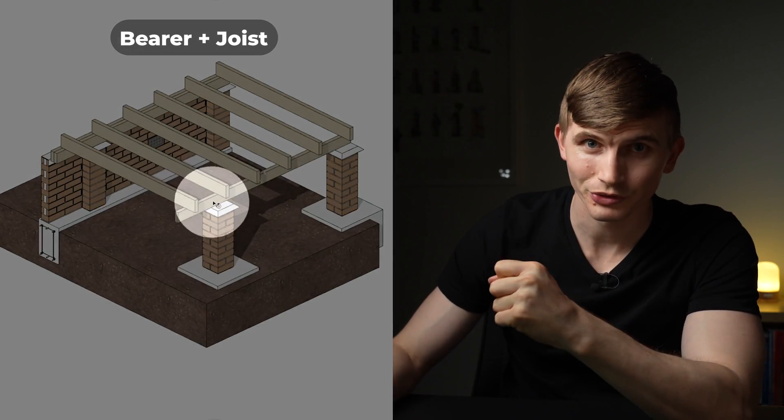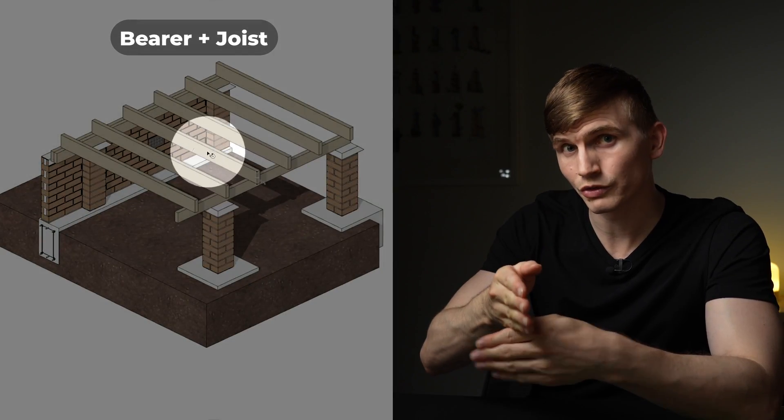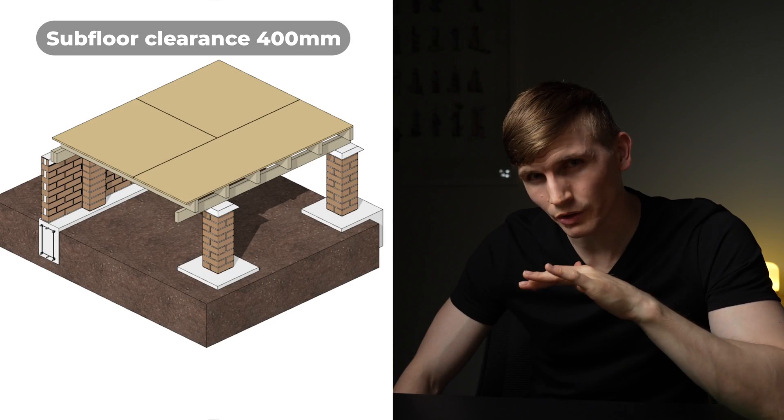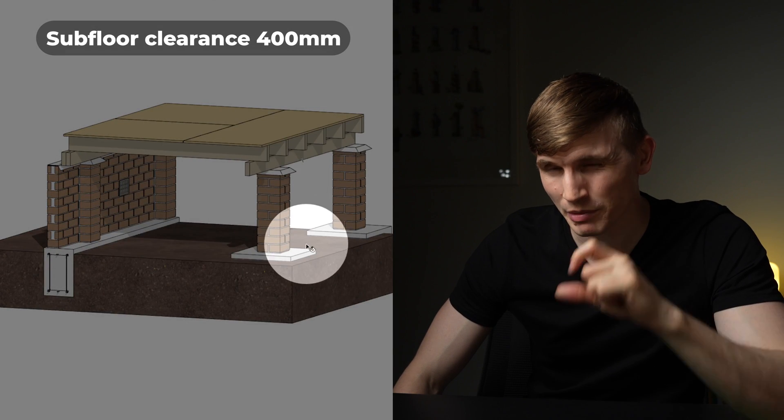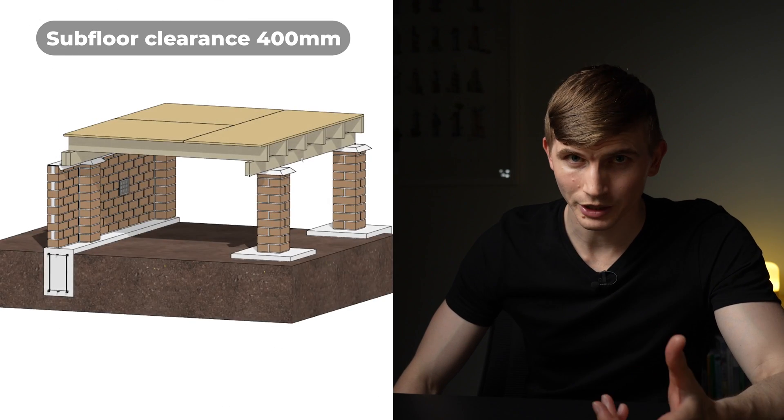Next up the bearers and joists. The bearers support the joists and the joists support the subflooring. Now for the subfloor ground clearance you're looking at a minimum of 400 millimeters where termite inspection is required.